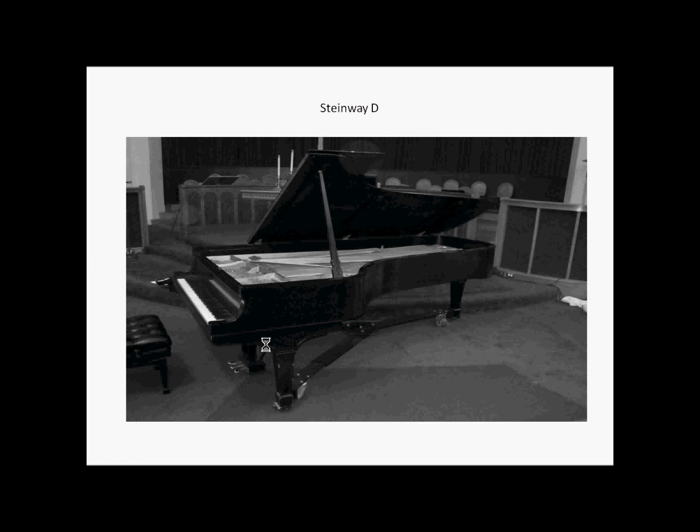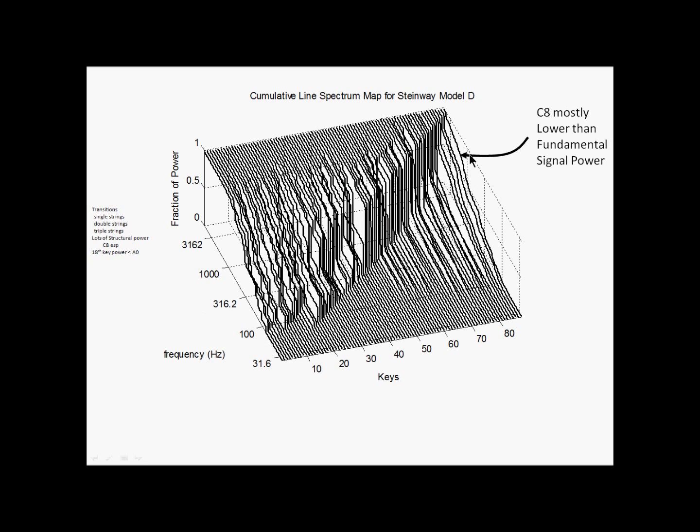Here's the Steinway D up at a church in Ithaca. This was built in 1911, it was rebuilt in the 90s. And here's the map. A lot of power below the fundamental. For example, this C8 here doesn't really have power until about the top 5%. Most of it's just lower frequency stuff. We've got the transitions here between the double, single, triple strings.